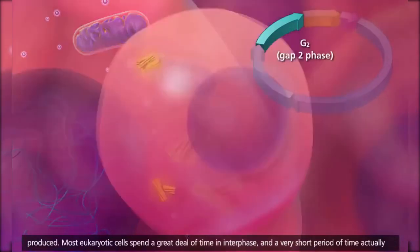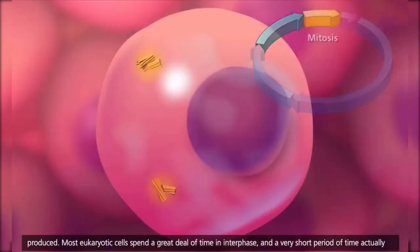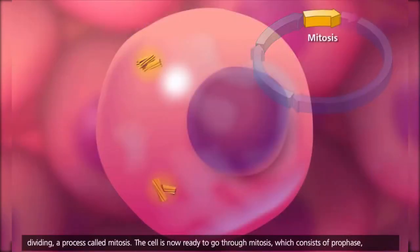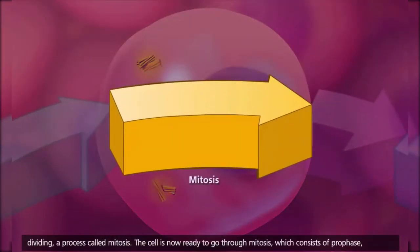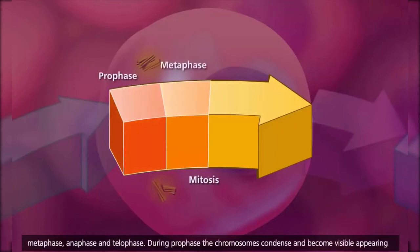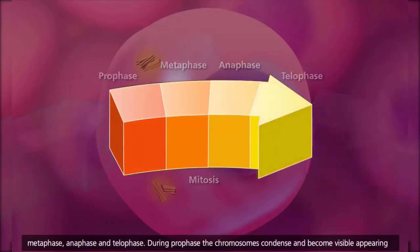Most eukaryotic cells spend a great deal of time in interphase and a very short period of time actually dividing — a process called mitosis. The cell is now ready to go through mitosis, which consists of prophase, metaphase, anaphase, and telophase.